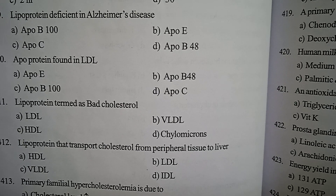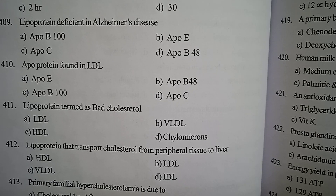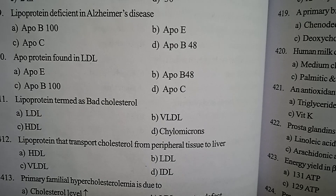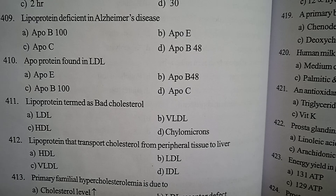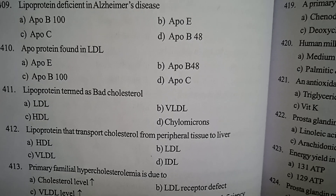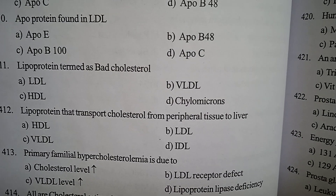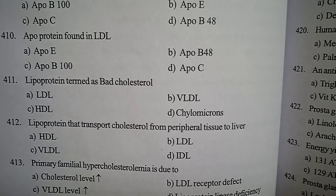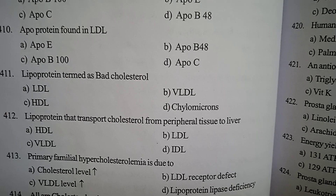Next one: lipoprotein that transports cholesterol from peripheral tissues to liver — option A HDL, option B LDL, option C VLDL, option D IDL. Correct answer: option A, HDL — also known as good cholesterol.